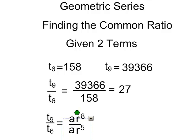We can do a little bit of canceling here. A divided by a is just 1 and r to the exponent 8 divided by r to the exponent 5 becomes r to the exponent 3. And so we wind up knowing that r cubed is going to be equal to T9 divided by T6 or 27.